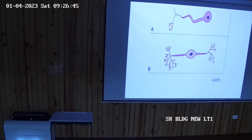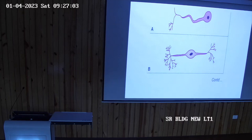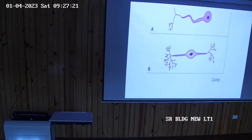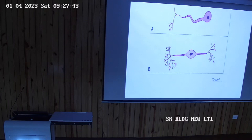Astrocytes are present in the gray matter providing nutrition and support to the neurons. Oligodendrocytes provide myelination of the nerve fibers in the central nervous system. In the peripheral nervous system, myelination is done by Schwann cells — also a type of neuroglial cell. Microglial cells do the phagocytic activity: if any foreign particles come into the brain, they are destroyed by the microglial cells.